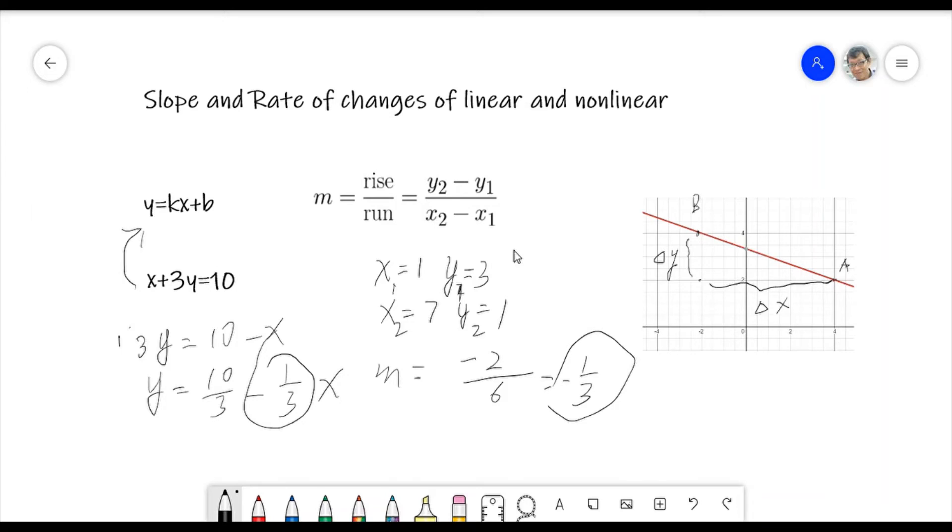In the opposite way to change one third. Which means the change of the rise is much smaller, is one third of the run. And the direction is going down.